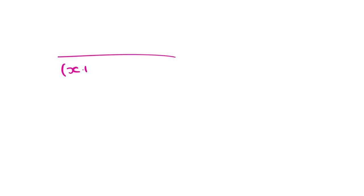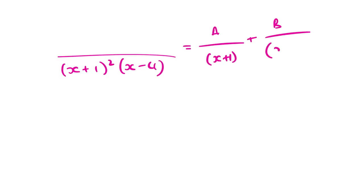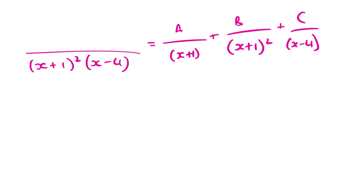Next chapter is algebraic fractions. Remember, if they have like (x+1)² on the denominator, you know that this is a/(x+1), then b/(x+1)², and then c/(x−4). It does not matter which order you put this in. There are two ways to do this. Whatever's on top — personally I like, if I had 3x+4 for example, I like to compare coefficients.